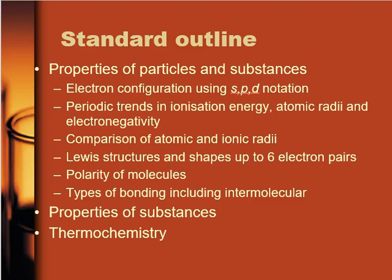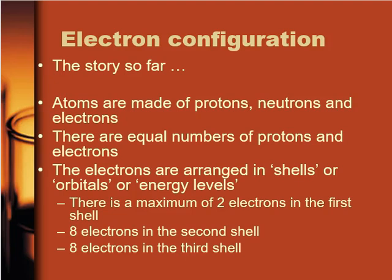So what I'm going to look at today is electron configuration. You will remember when you were in year 9 or year 10, your teacher will have told you that electrons live in orbitals — two electrons in the first orbital, eight electrons in the second orbital, eight in the third, and we get up to calcium where there are two electrons in the next orbital. If you had an honest chemistry teacher at that stage, they will have told you this was an oversimplification.